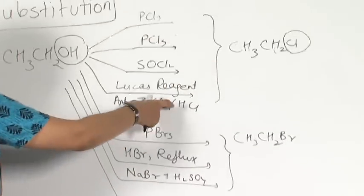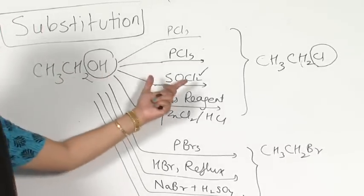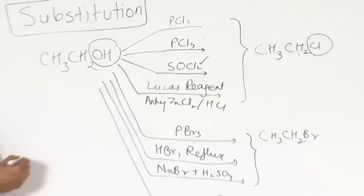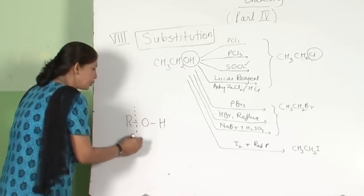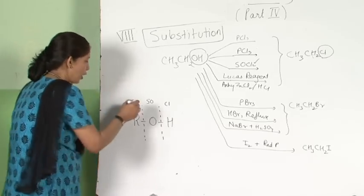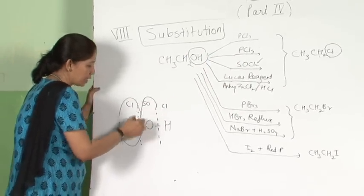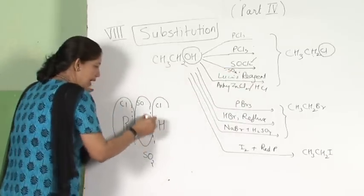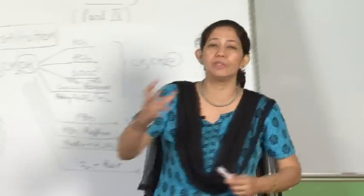Among all these reagents, thionyl chloride (SOCl2) is preferred for the preparation of alkyl chlorides. The reasoning: when alcohol reacts with SOCl2, the bonds cleave and SOCl2 splits giving RCl as the main product, SO2 as one byproduct, and HCl as another byproduct. Both SO2 and HCl are in the gaseous state, so they easily escape, leaving behind the pure product.